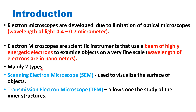Electron microscopes are of two types. One is the scanning electron microscope, known as SEM, which is used to visualize the surface of objects. The other is the transmission electron microscope, which is used to study the inner structure of the specimen.